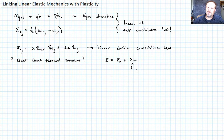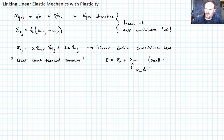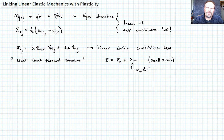We would define epsilon_t as the coefficient of thermal expansion alpha times the temperature difference delta T from some reference. This representation implicitly assumes small strain. Anytime we can add strains like elastic plus thermal, we're talking about small strain. For large strains, we'd need a multiplicative decomposition using the deformation gradient tensors, but we're not going to focus on that in this class.